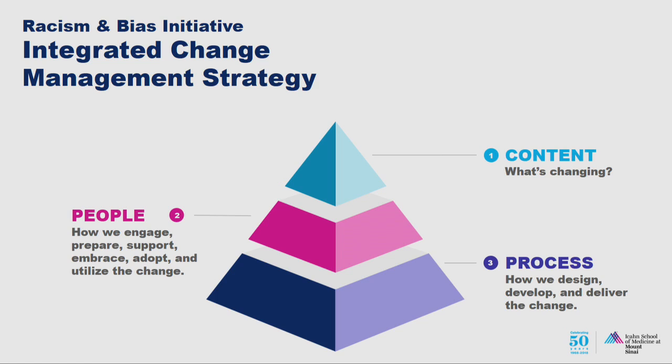Often when we think about changing something, especially in productivity-heavy or outcome-driven environments, we focus on what is changing — like 'we're going to develop a training.' We don't necessarily consider how people engage and adopt that change. Before a training happens, do we think about what needs to happen for it to be adopted? With adult learners, you don't just tell somebody to do something and they change. If that worked, we probably wouldn't have jobs.